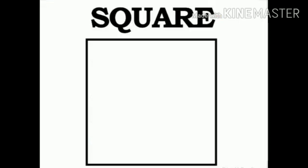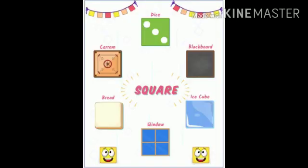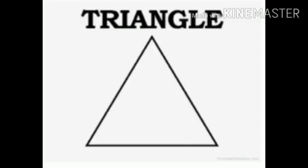This is a square. Let us now see the various objects that are square in shape. Dice, blackboard, ice cube, window, bread, carom are square in shape.